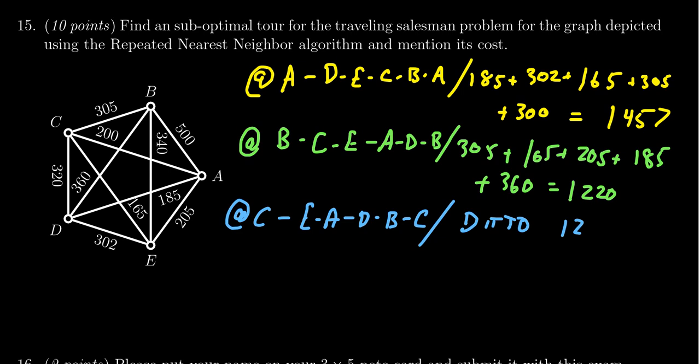Starting at D this time, we take the nearest neighbor, which is A at 185. At A, we go to C, which costs 200. At C, we go to E, which costs 165. Then we go to B, which costs 340.